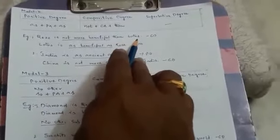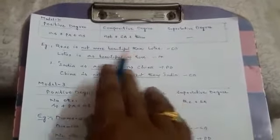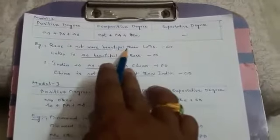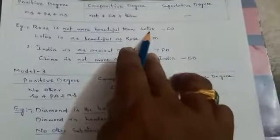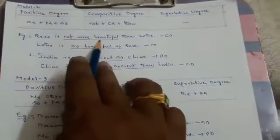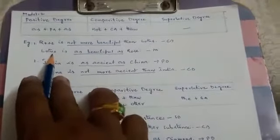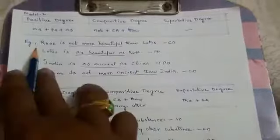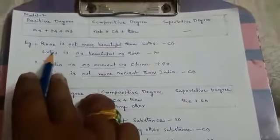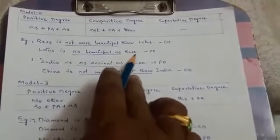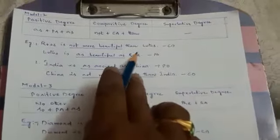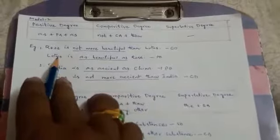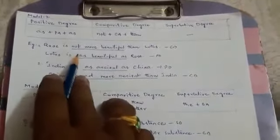Remember the example: 'Rose is not more beautiful than lotus.' What is given here is: not plus more beautiful. To change the sentence, as usual, subject and object are interchanged: 'Lotus is as beautiful as rose.' That means, however beautiful rose is, lotus is the same. So we say: 'Lotus is as beautiful as rose.'